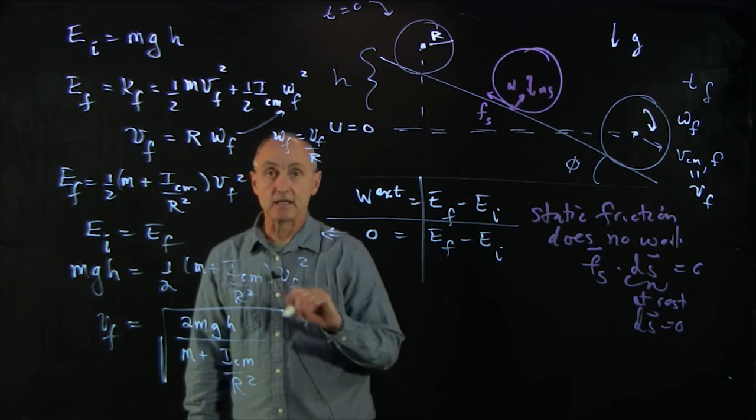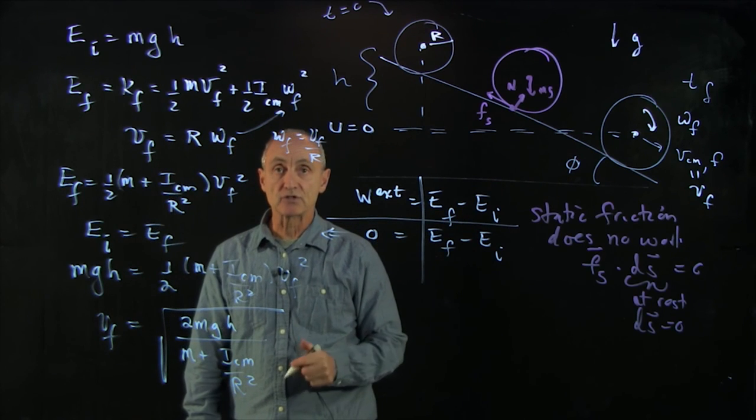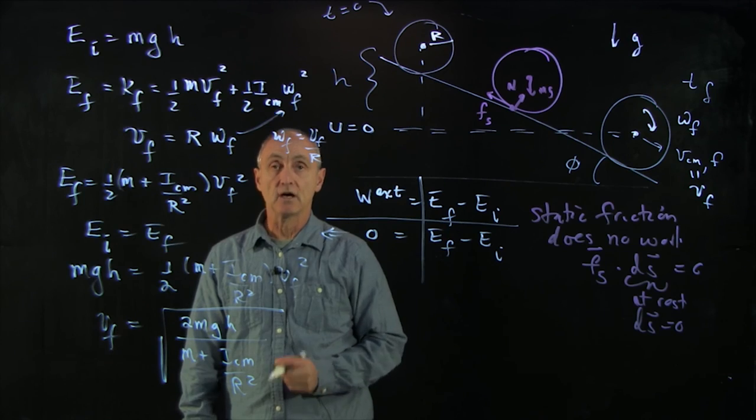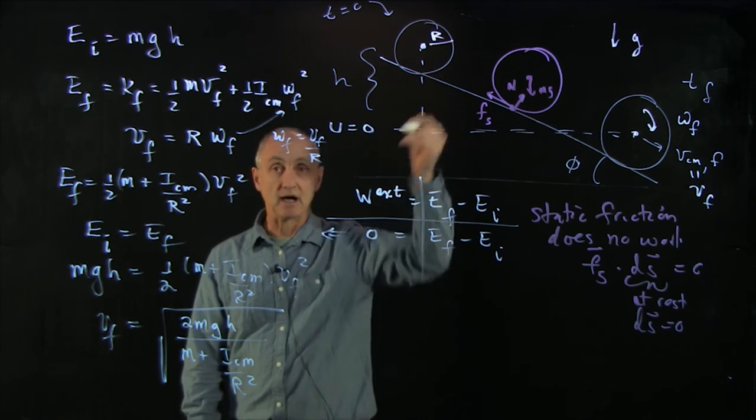And that is the final speed of the center of mass translational velocity of the wheel as it dropped a height h.